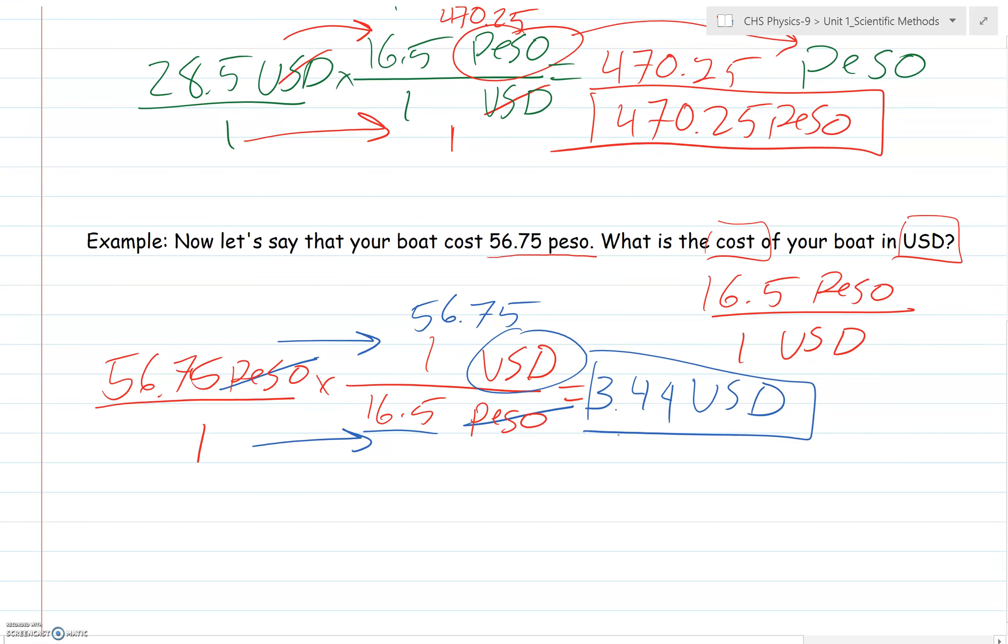Now I can go back and check to see if I did this correctly by looking at my units and figuring out if this should be bigger or smaller than 1. For every 1 USD, I get 16.5 peso. I've got 56.75 peso. Do I have more than $1 here? Do I have more than 16.5 peso? Yes, I do. So I know I should have more than $1 in the end. That's how I can check my answer. Stay tuned for the next video notes for how to use metric prefixes to do the same thing.